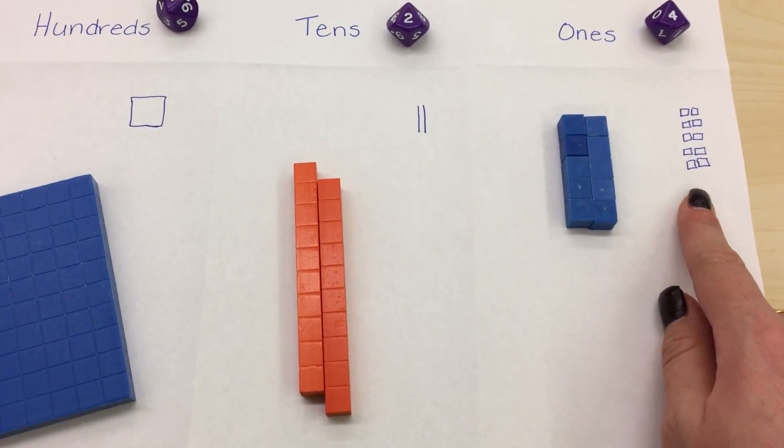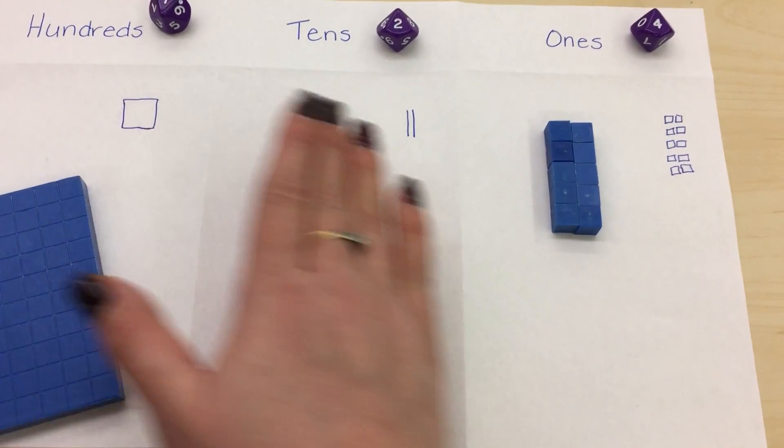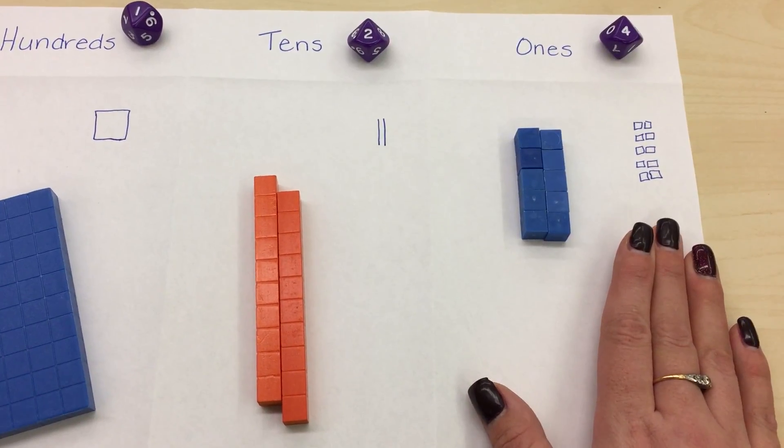Now that I've added five, my hundreds and my tens have stayed the same, so I have one hundred twenty, and I have a ten.